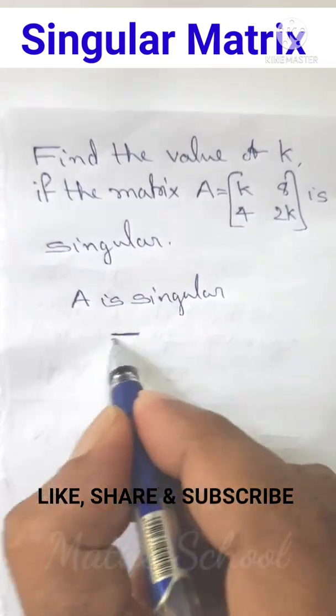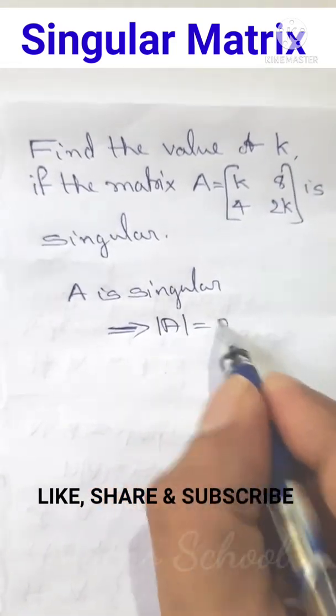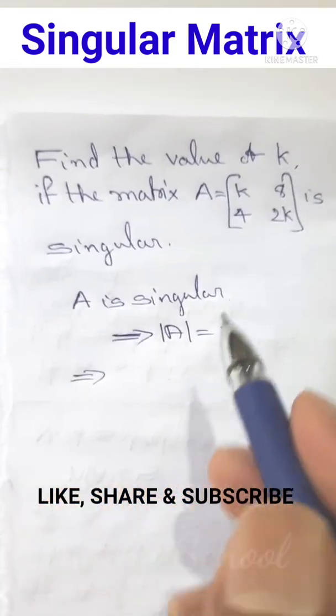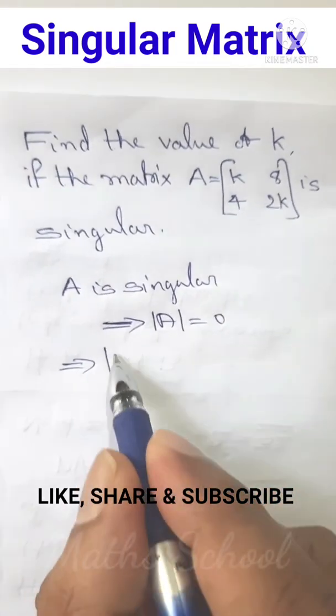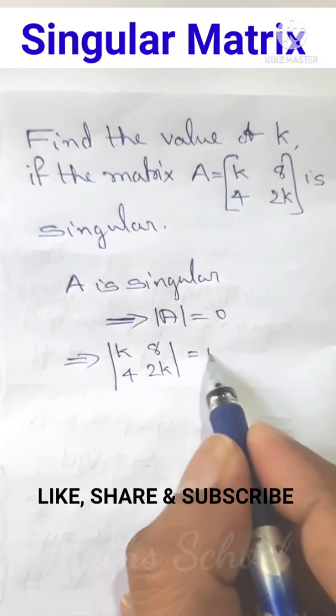If the matrix is singular, then we will determine the determinant equal to 0. That is, determinant of A equal to 0. This implies we have determinant of A equal to determinant of [K, 8; 4, 2K]. This is equal to 0.